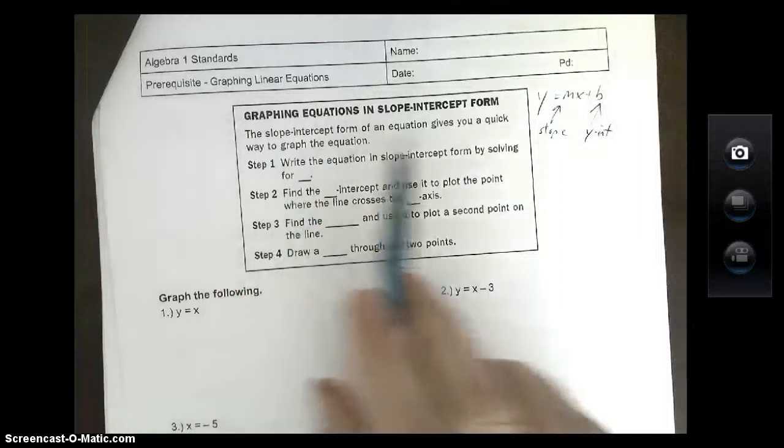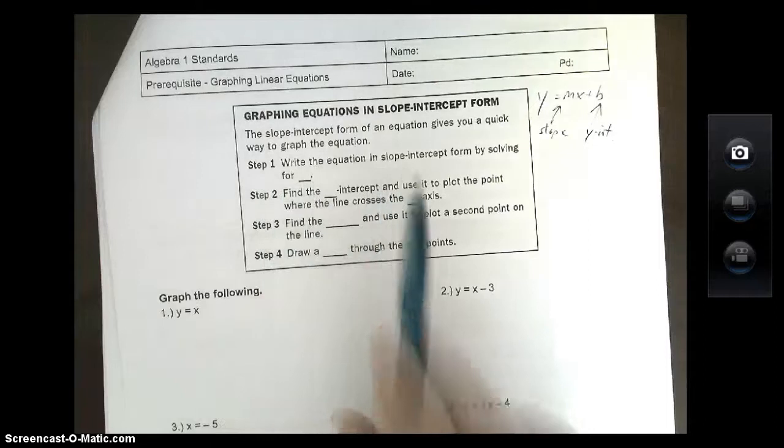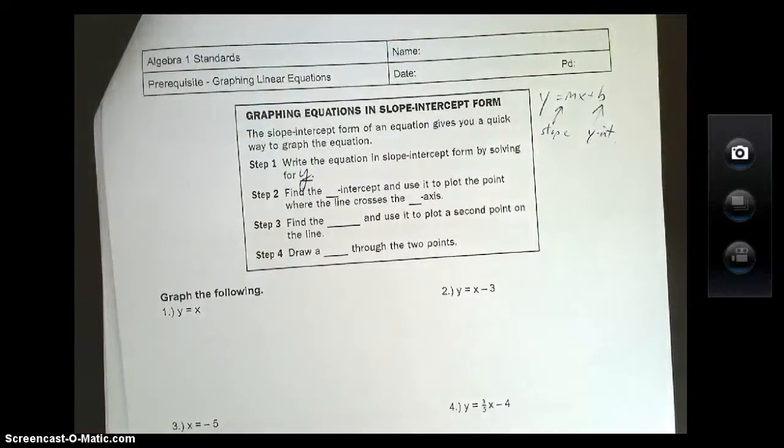The slope-intercept form equation gives you a quick way to graph the equation. Step 1: write the equation in slope-intercept form by solving for y. We've got to get y by itself.